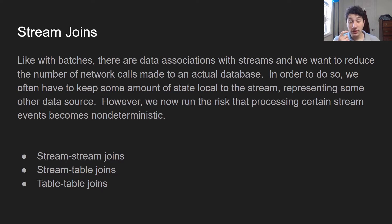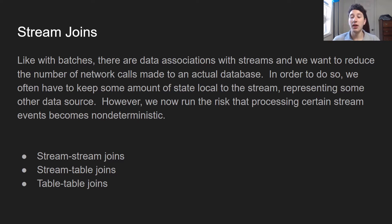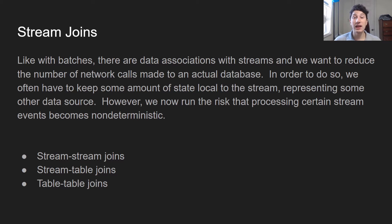Now let's quickly talk about stream joins. If you watch the batch processing episode, there are batch processing joins, and this all basically comes from the fact that there are associations within the data. More or less, we want to be able to do a ton of joins here. There are three types: stream-stream joins, stream-table joins, and also table-table joins.